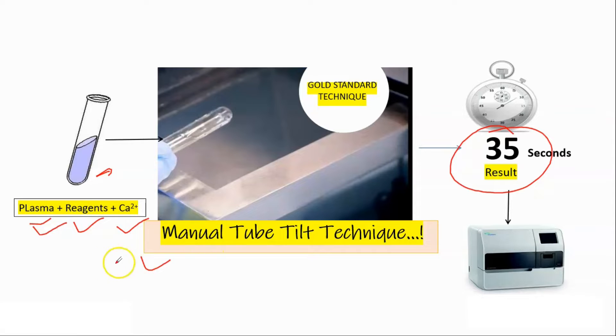So basically all this stuff is replaced by this automated instrument, coagulation analyzer. So now what's actually happening inside an automated instrument for clot detection is what we will discuss here.